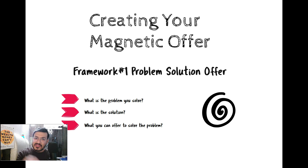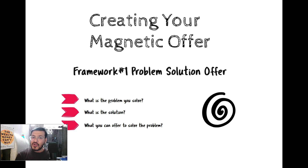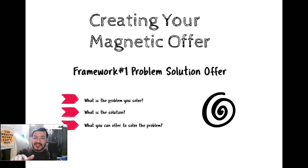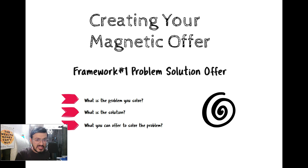These are the three things. When you know this is the problem I am solving, then you know this is the solution, and then you know exactly what are the things you are going to offer to solve the problem. Half of the thing is already done because now the offer is very, very relevant to your audience. When they get to know about this offer — where you are solving a real problem they are facing, giving them the solution, and they know what you are offering to solve it — it's going to be very, very attractive to the marketplace. This is the first framework you need to follow to create a magnetic offer.